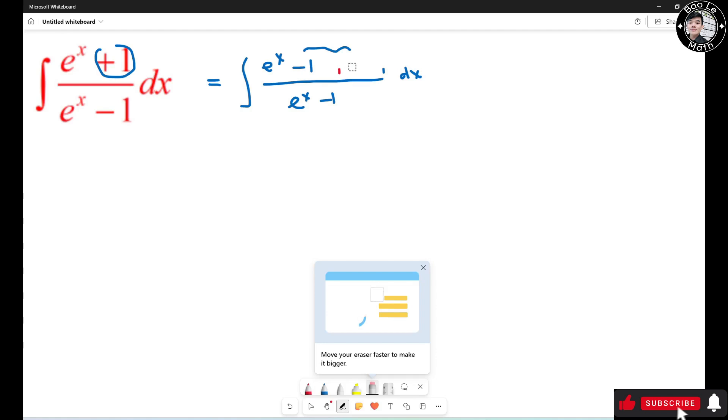Now I'm going to separate this fraction by taking this 1 divided by e to the x minus 1. So it's the integral of 1 dx plus the integral of 2 over e to the x minus 1 dx.